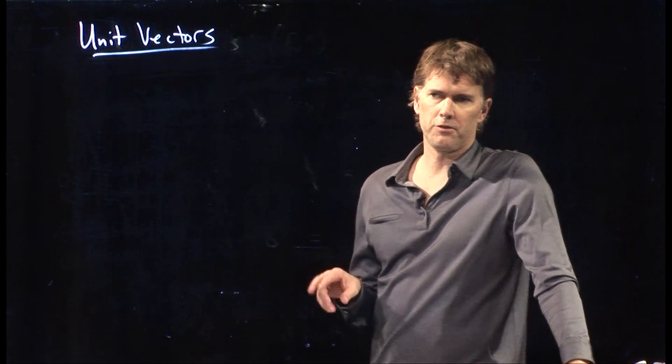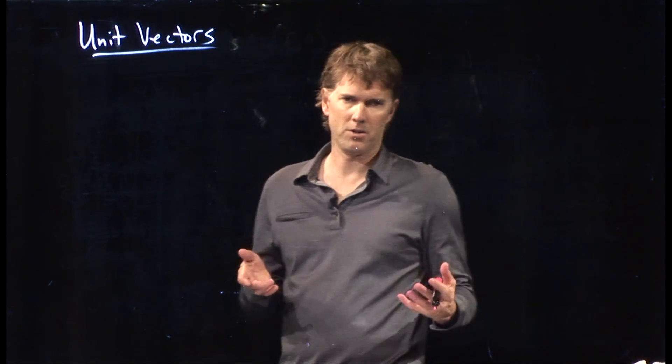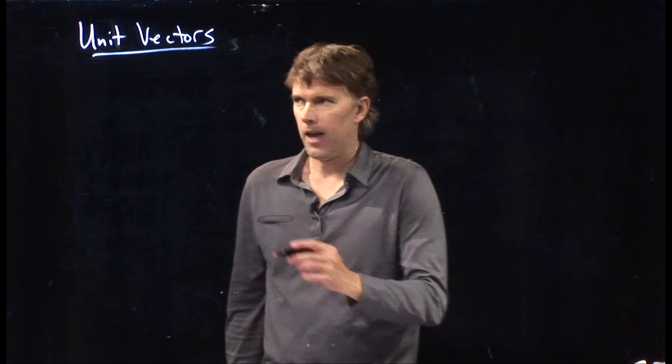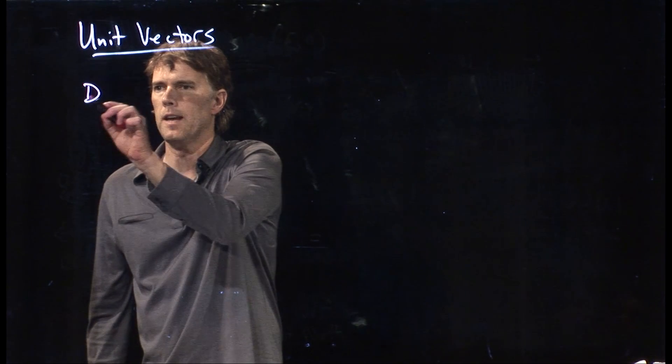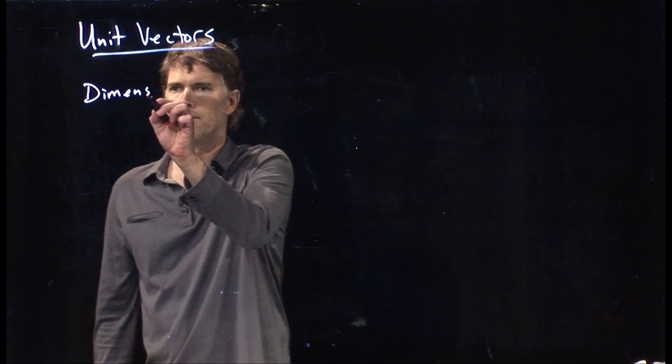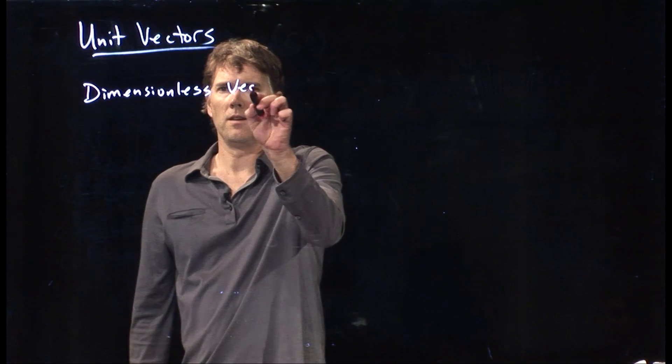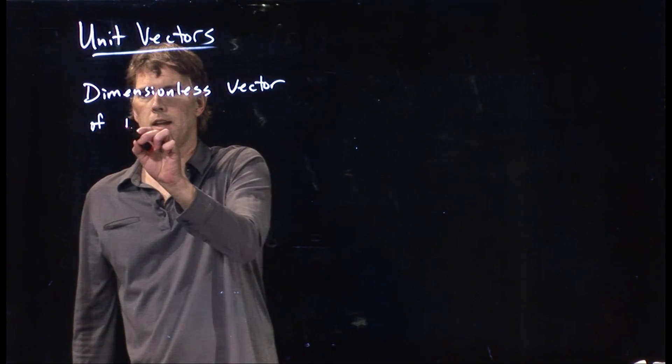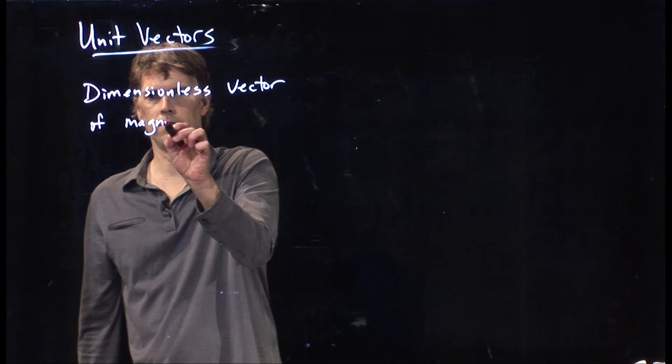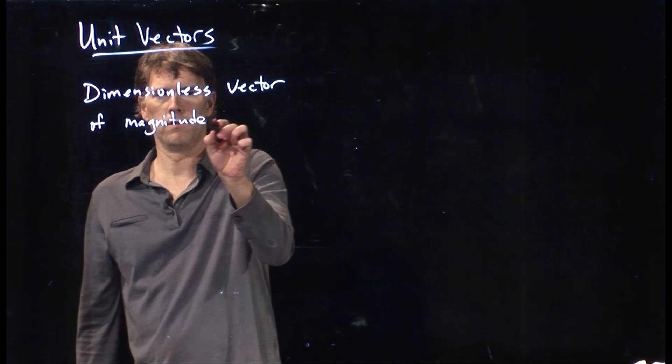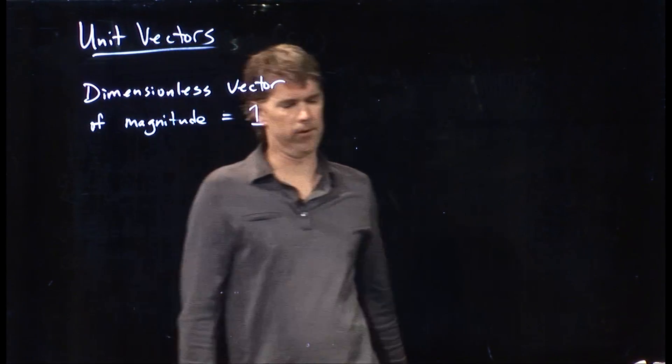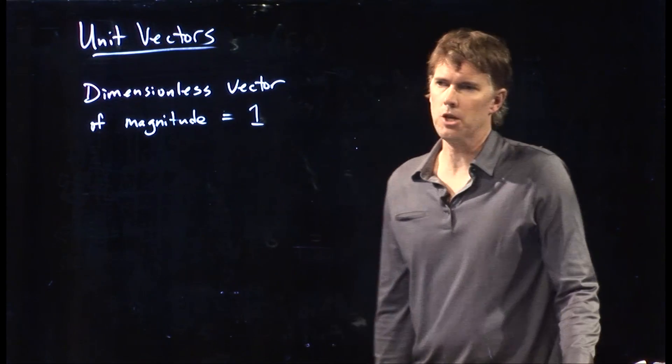This is a way to describe vectors in Cartesian coordinate space. A unit vector is a dimensionless vector. There's no units associated with it, and it has a magnitude equal to one. And that's why it's called a unit vector.